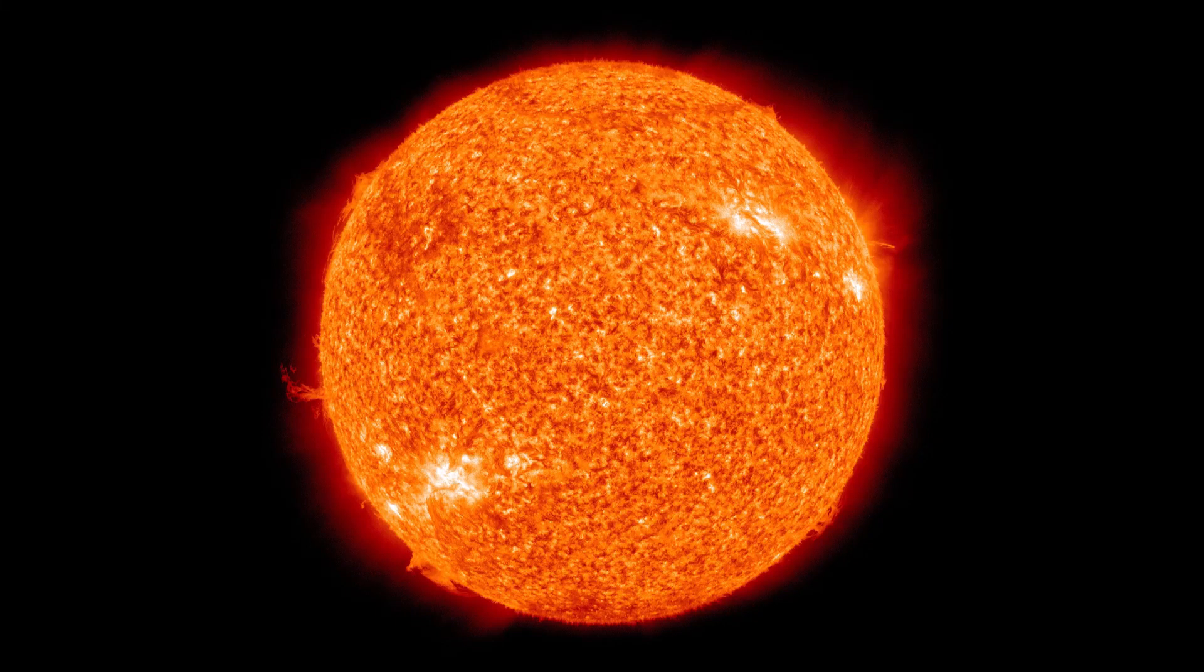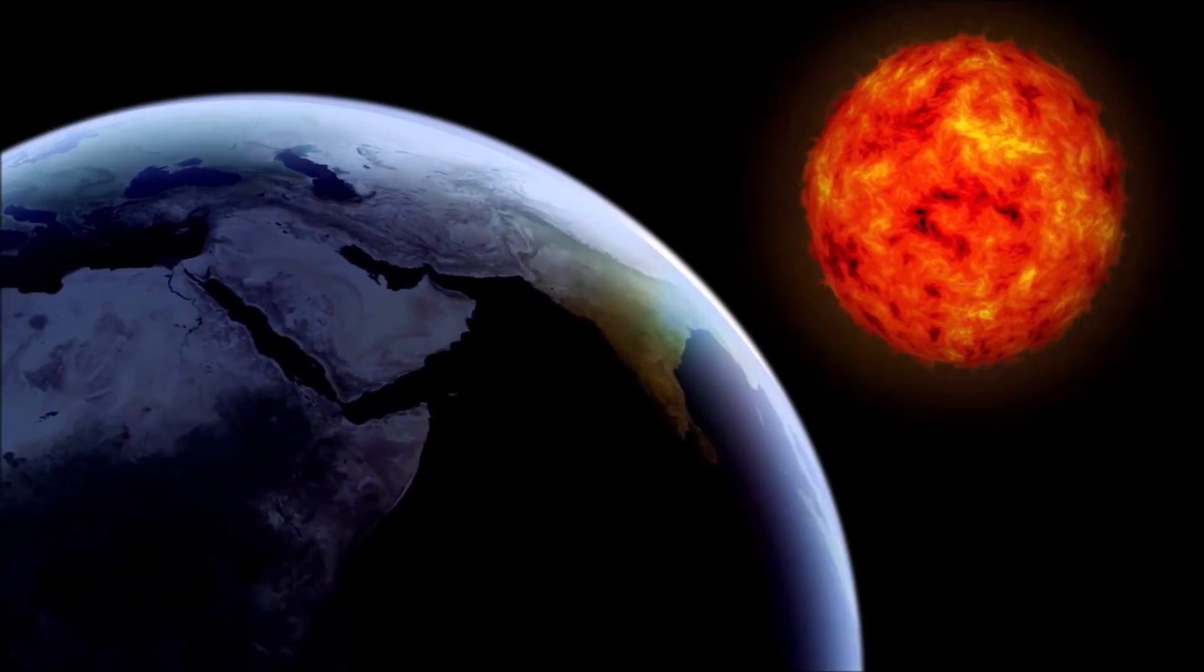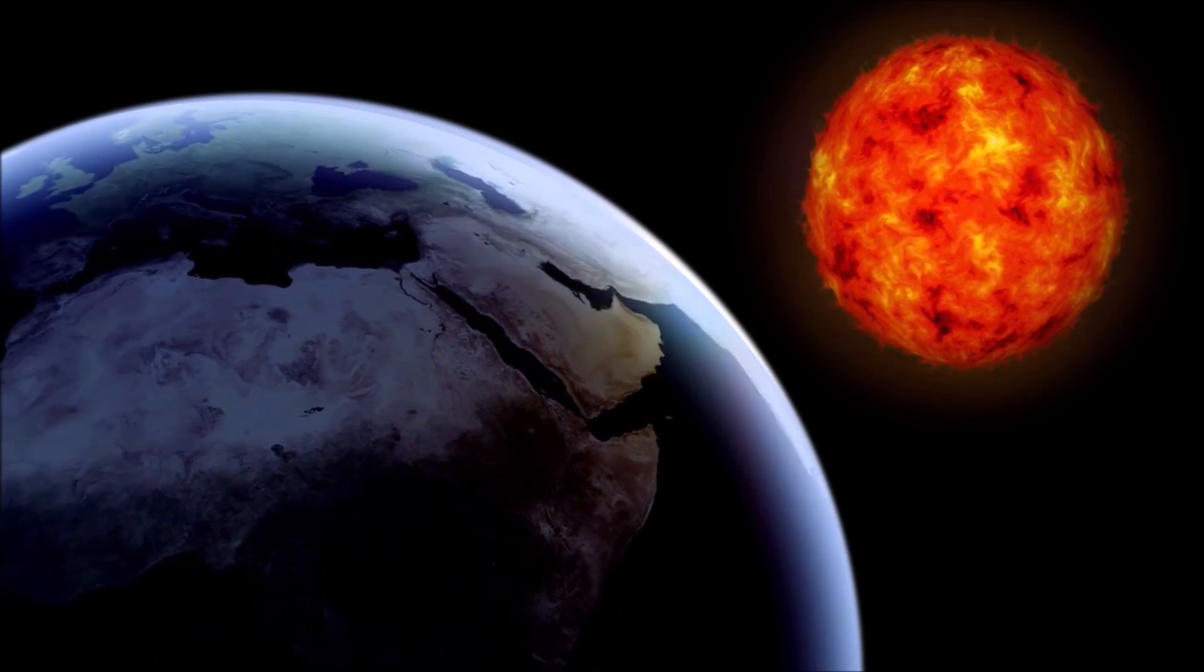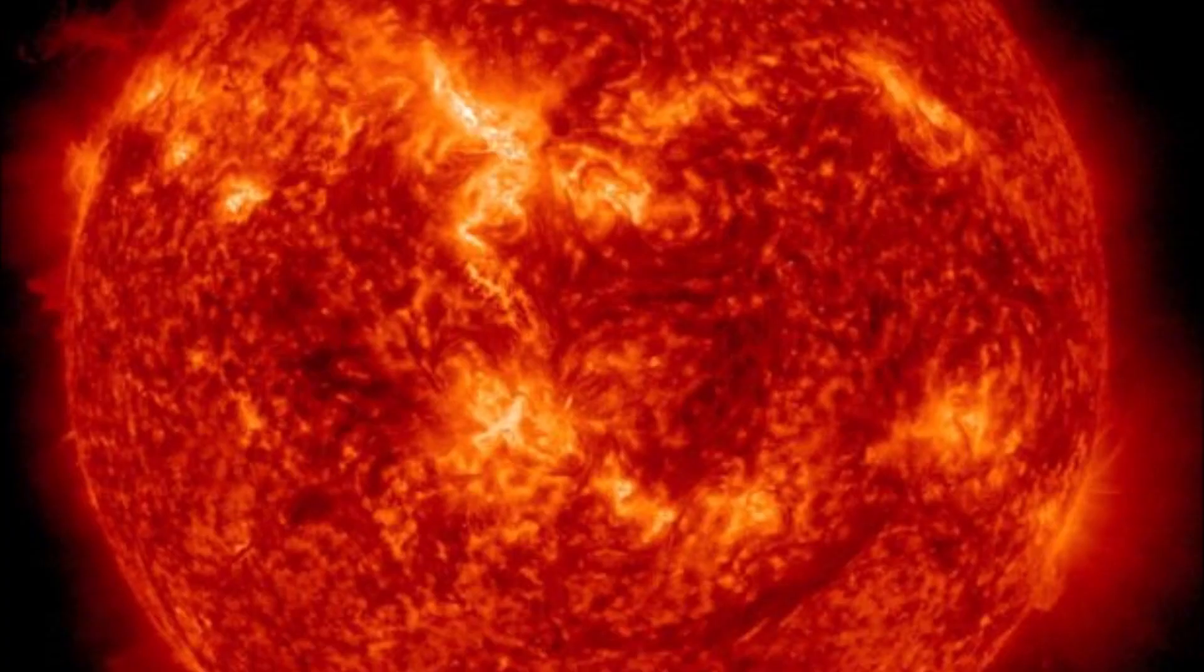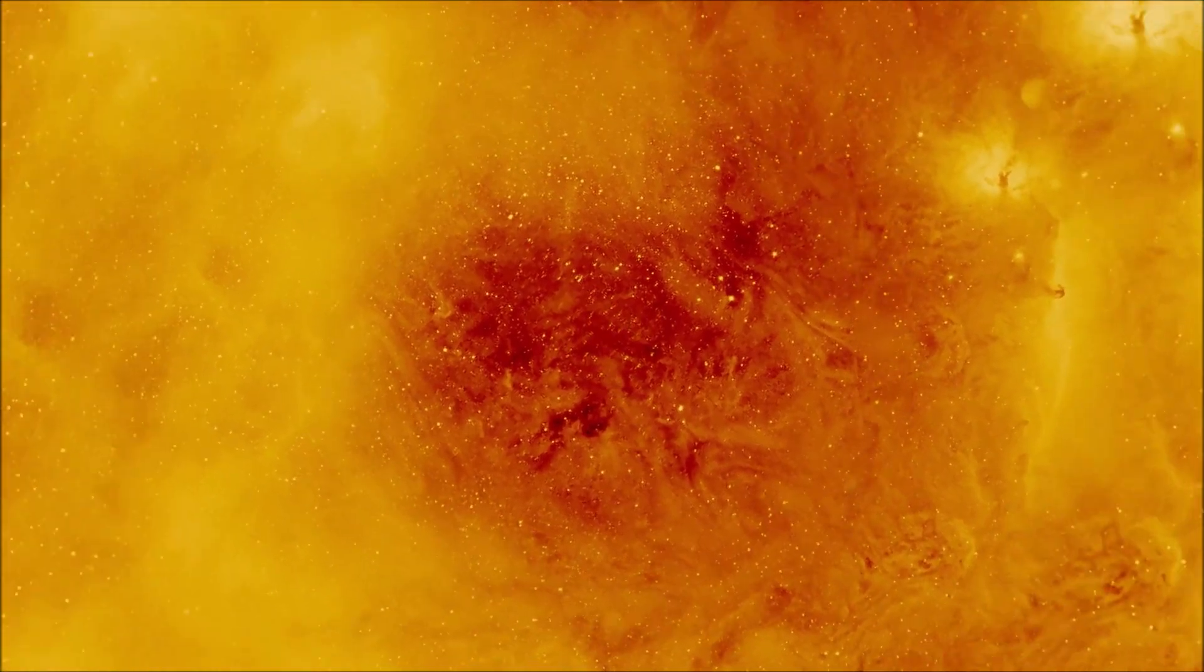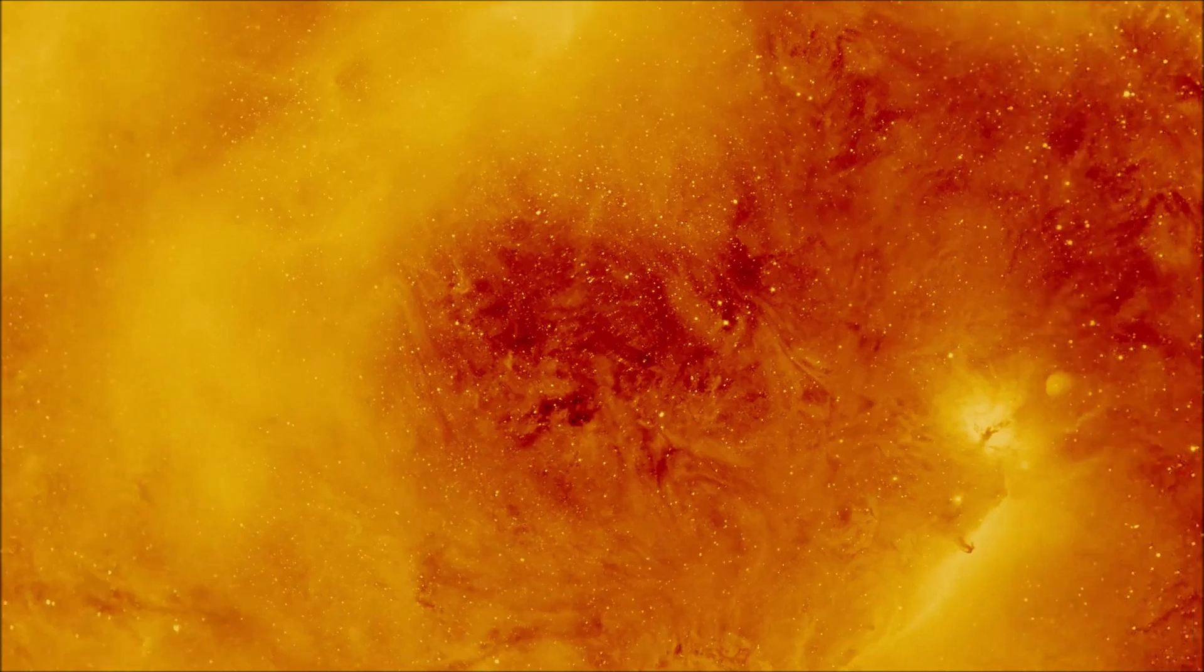25 Fun Facts About The Sun. The Sun is a star and is the closest star to Earth. The Sun is about 4.6 billion years old and is in the middle of its lifespan. The Sun is made up of 70% hydrogen and 28% helium.